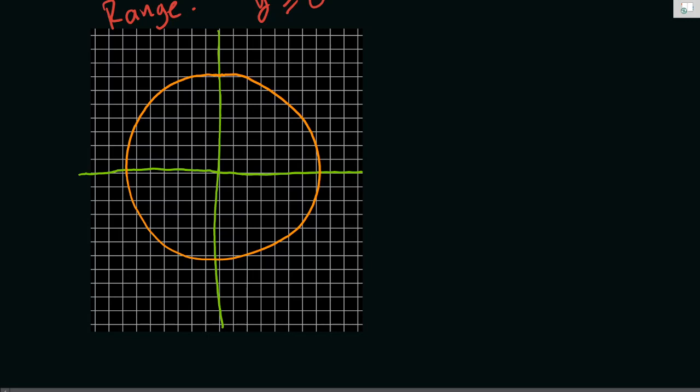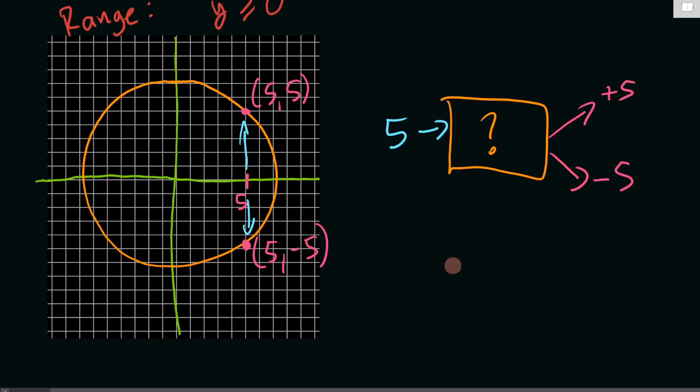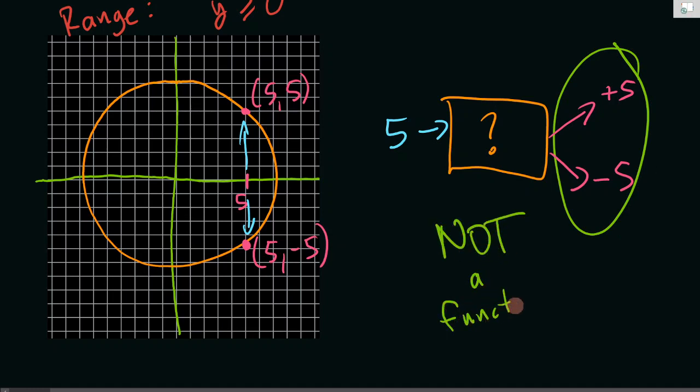So we've got a circle on our coordinate plane. If we've got a circle on our coordinate plane, is the circle a function? Let's look at this point here. Let's just assume it's one per box. That's a point at five comma five, but there's also a point here at five comma, let's just say, negative five. That means that this one value, x equals five, gives you two different possible values. So in this case, you've got five going into your box, and that five gives you positive five or it gives you negative five. And because you can get two different values here, this is not a function.